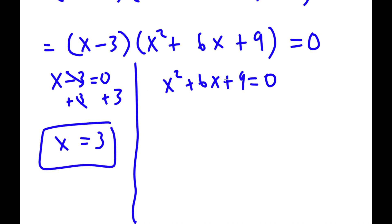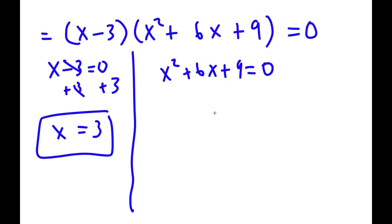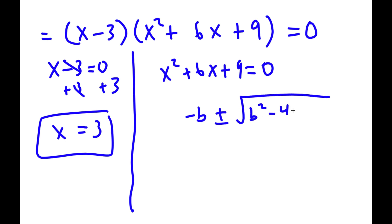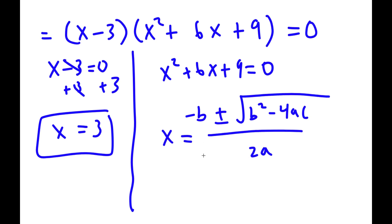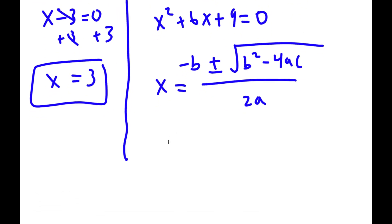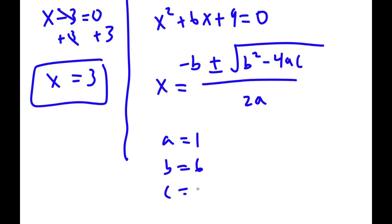For x squared plus 6x plus 9 equals 0, I actually have to use the quadratic formula to solve this. The quadratic formula is negative b plus or minus the square root of b squared minus 4ac, all over 2a. So in this case, a is equal to 1, b is equal to 6, and c is equal to 9.